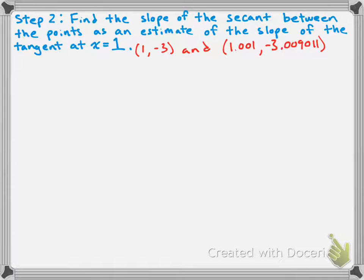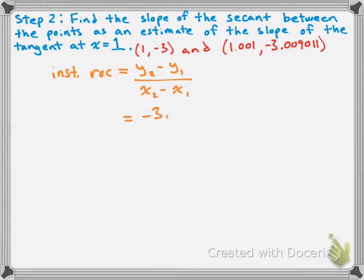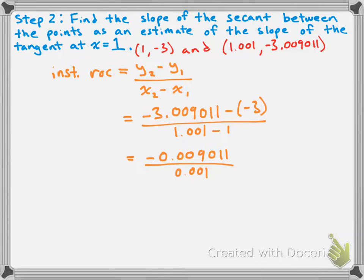We know our average rate of change formula, and we'll use it here for the instantaneous rate of change: (y₂ - y₁) / (x₂ - x₁). Substituting our values in, we get (-3.009011 - (-3)) / (1.001 - 1). Cleaning up the top and the bottom, we get -0.009011 / 0.001. Note that the denominator, 0.001, is exactly the difference between the x values we chose.